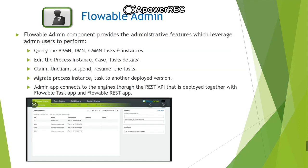After that we have Flowable admin, which is an administrative app that allows users with admin privileges to query the BPMN, DMN, form and content engines, and provides several options to change process instances, tasks, jobs and so on. The admin app connects to the engines through the REST API deployed together with the Flowable UI application and the Flowable REST application. We can perform administrative operations such as claim, unclaim, migrate, suspend and resume tasks or process instances.